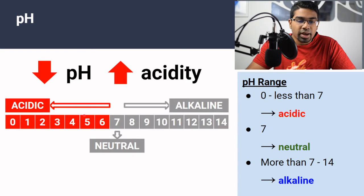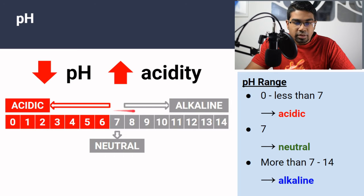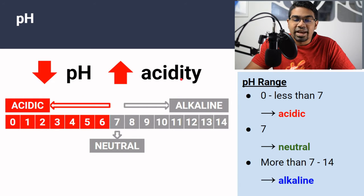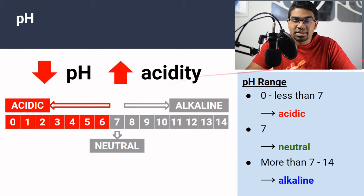This is why as we go left from 7 on the scale — 7 is the neutral point — the lower the pH, the higher the acidity. A highly acidic substance will have a lower pH compared to a less acidic substance.